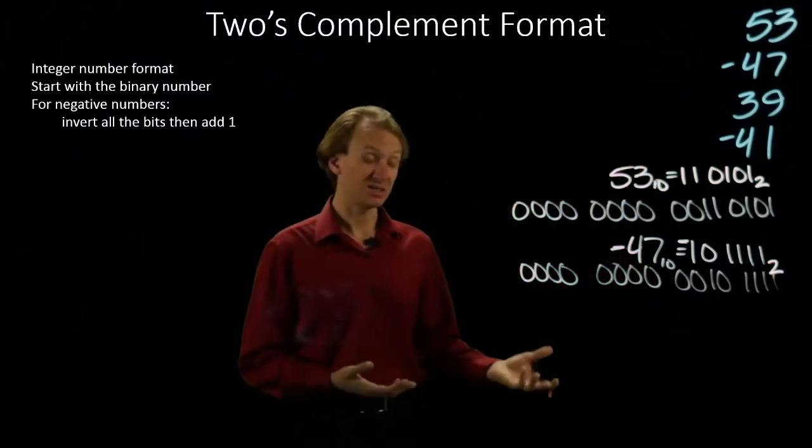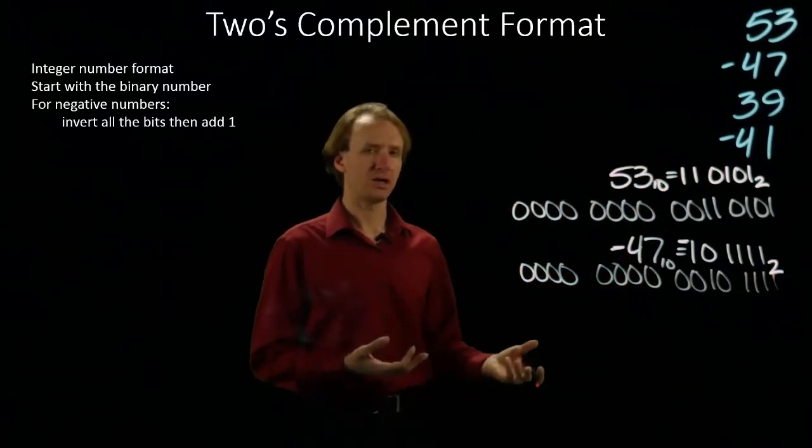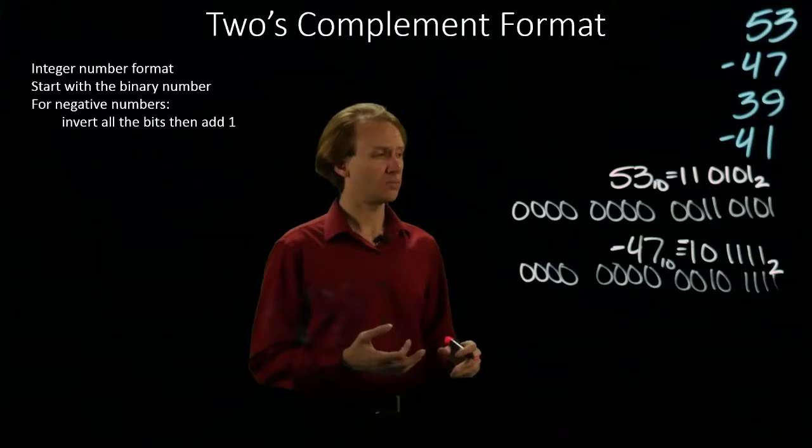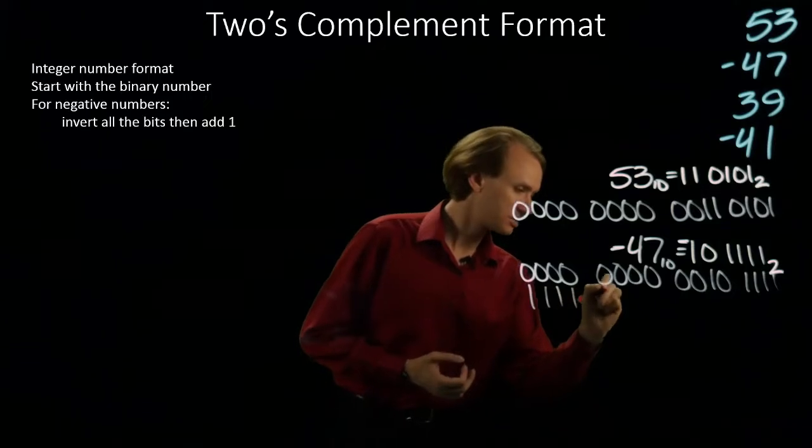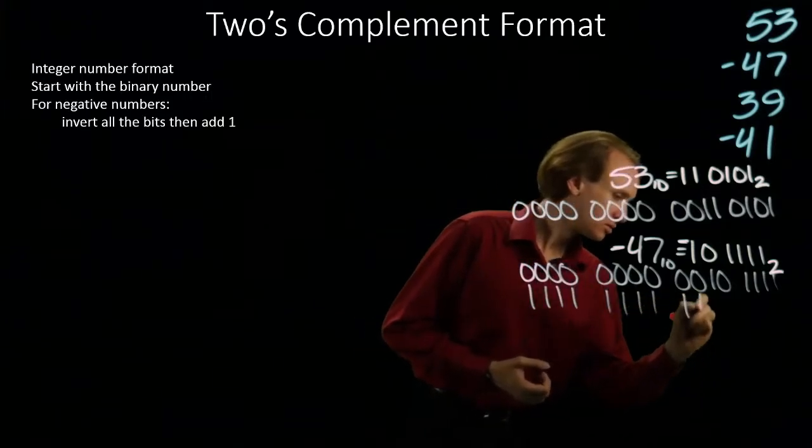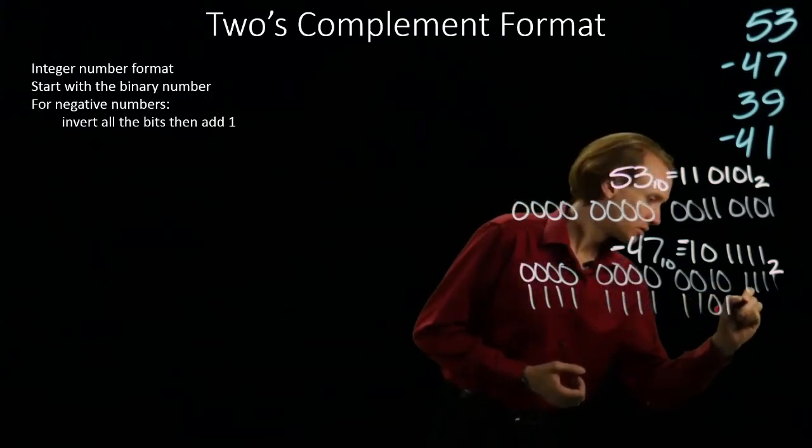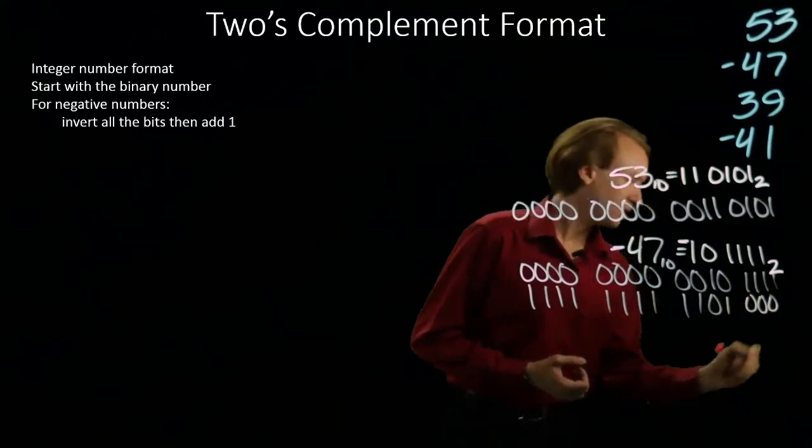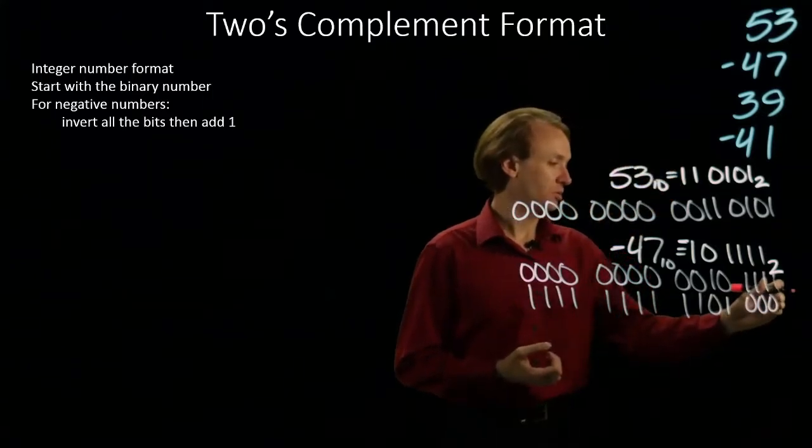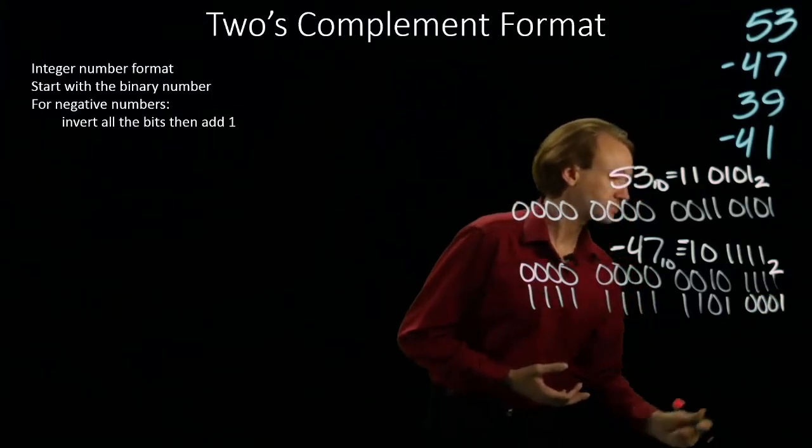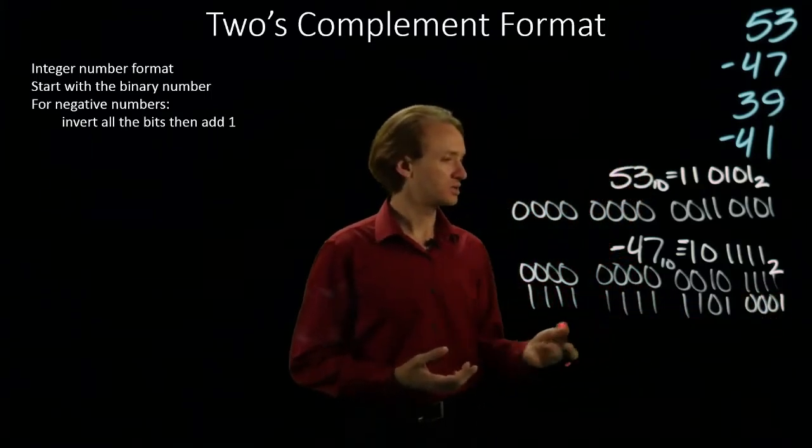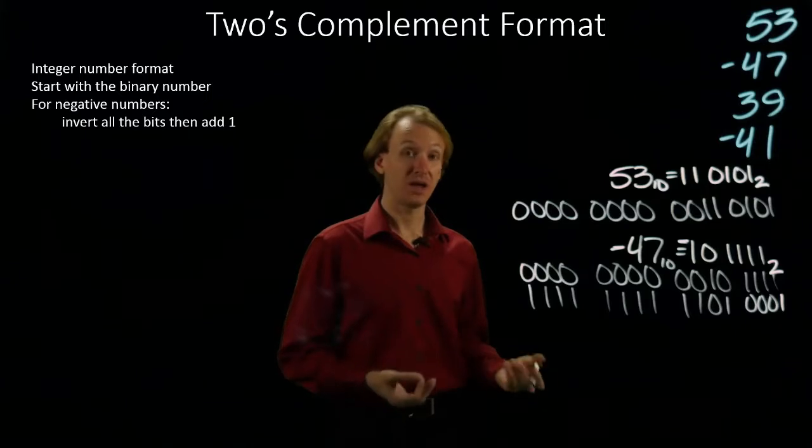So there is positive 47, but I want negative 47, so I'm going to apply the two's complement operation to this. I will flip all of the bits and I will add 1 to this. I would normally have a 0 there. 0 plus 1 will give me a 1. So there is the two's complement representation of negative 47.